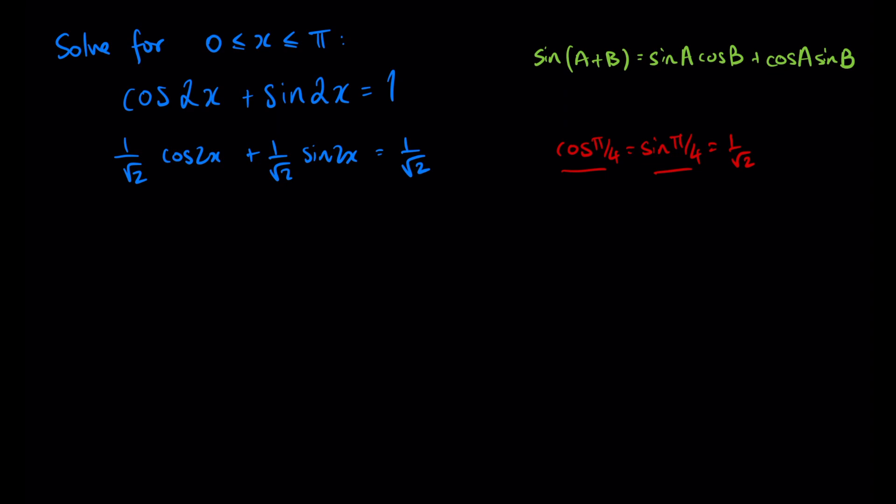So substituting those terms, we're going to have sine of π on 4 cosine of 2x plus the cosine of π on 4 sine of 2x equals 1 on root 2.